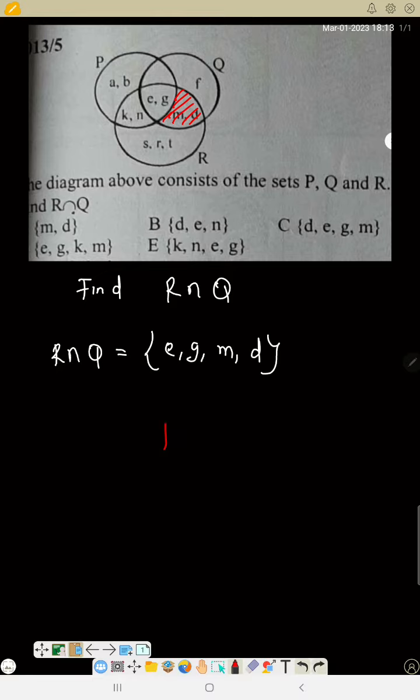Everything here is R intersection Q, so everything. The answer is E, G, M, D.